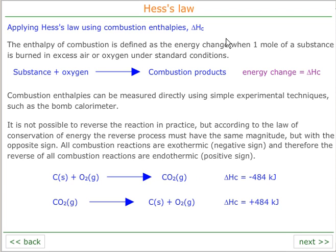We can apply this to, for example, combustion enthalpies in the case of having substances that actually burn. Combustion is just the reaction between a substance and oxygen to produce combustion products. Combustion enthalpies are historically very useful because they can be measured using a bomb calorimeter — they can be measured by experiment.